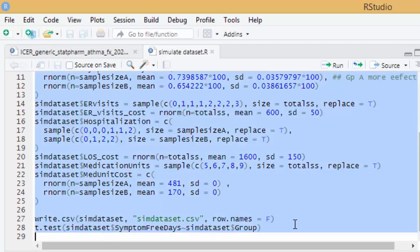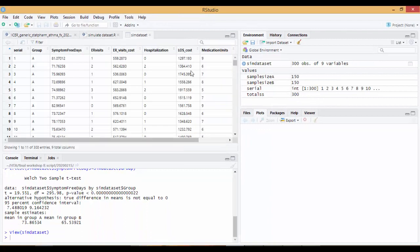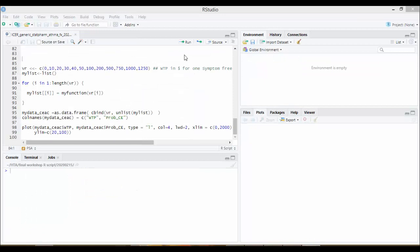So here is our simulated dataset and you can find it in the working directory as a CSV file. So let's now run our model in R.